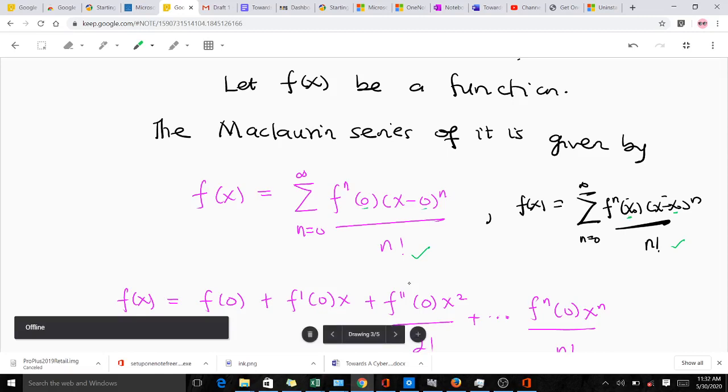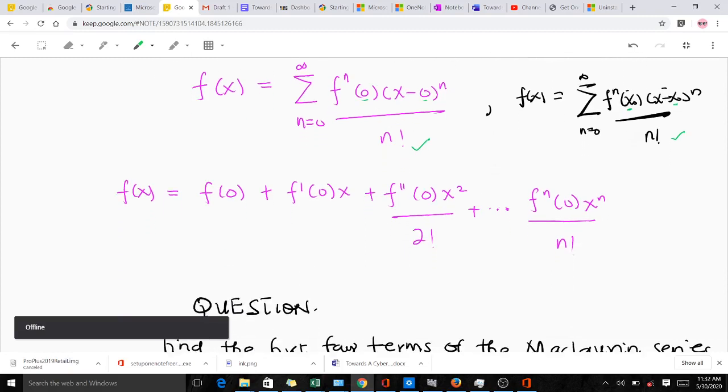When we expand it, you realize you are going to get this as you can see here, where this is the first term, this is the second term, this is the third term, and this is the last term or the nth term. You realize that this here stands for the first derivative, the second derivative, and the nth derivative. So whenever you have any function f(x) and you want to find the Maclaurin series of it, we use this formula to do the expansion.